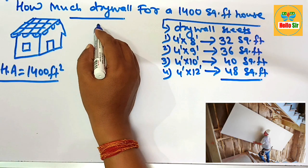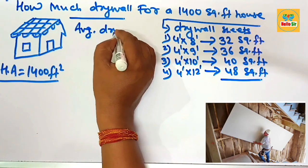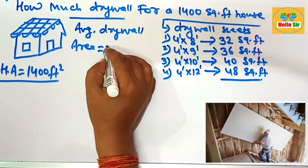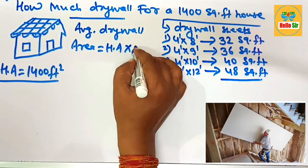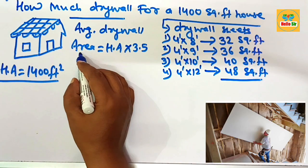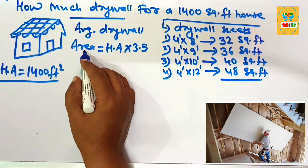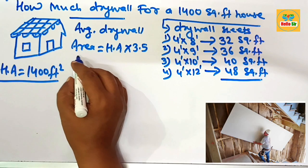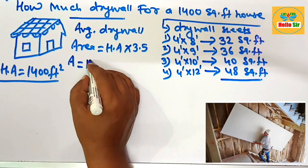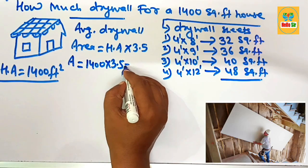Now, how do we calculate the total drywall area? There is a thumb rule factor and formula used to calculate the average drywall area. The formula is: area equals 1400 multiplied by 3.5. This is the thumb rule factor to calculate the average drywall area for the house, because it has many room options.